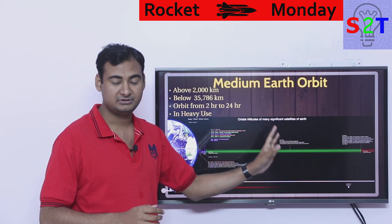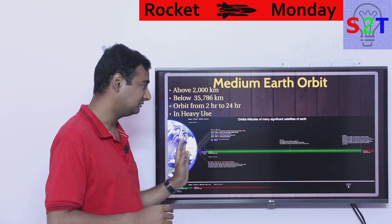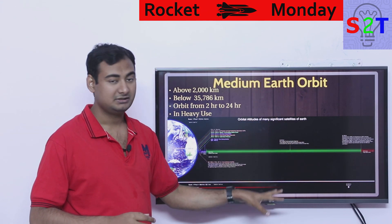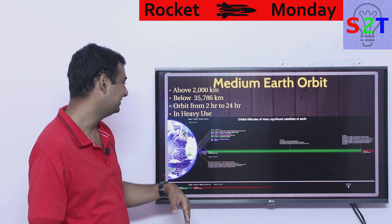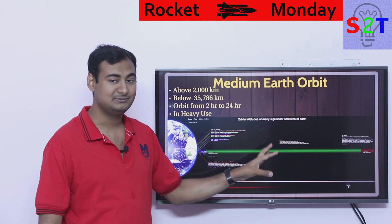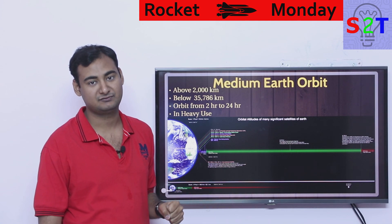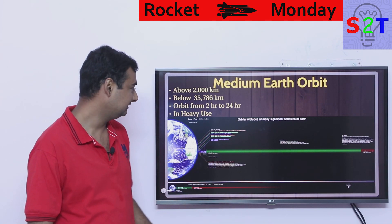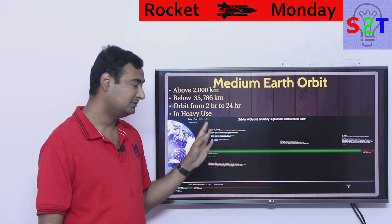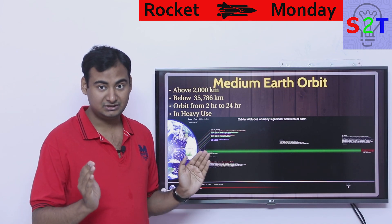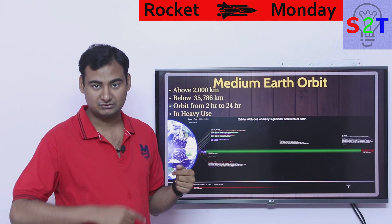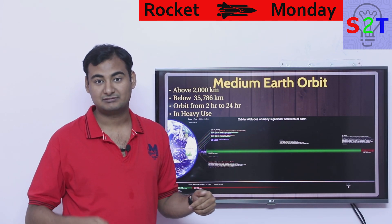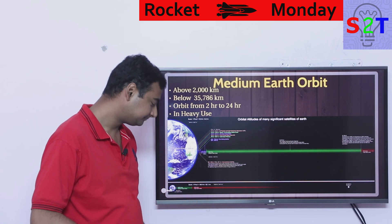So in between LEO and GEO you get MEO — medium earth orbit. That is the most useful band for satellites and it is in very heavy use. In MEO the orbits can range from two hours to take one orbit, all the way up to almost 24 hours, almost touching geostationary.